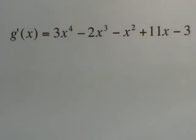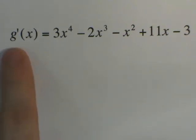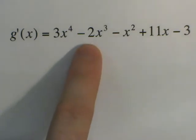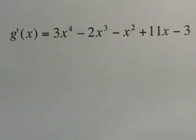Here's our last example for the power rule on differentiation. Notice that we already have the first derivative, so it says g prime of x is equal to 3x to the 4th minus 2x cubed minus x squared plus 11x minus 3.